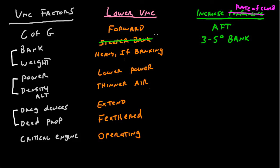So a lot of the time you'll see people say to lower VMC use 3 to 5 degrees of bank. Now that's not entirely correct because it has nothing to do with VMC, but it is helpful to increase performance.